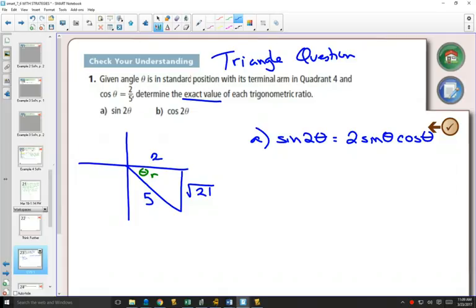From our triangle, we already knew that cos of theta was 2 over 5. Now that we've made our triangle, we know that sine of theta, opposite over hypotenuse, is going to be root 21 over 5. And it's going to be negative because sine is negative in quadrant 4.